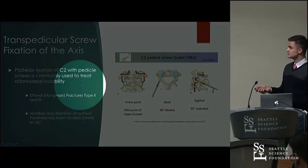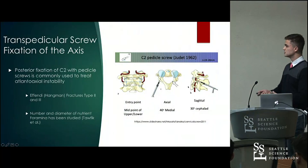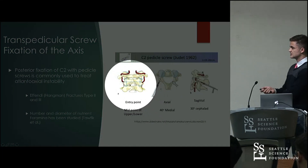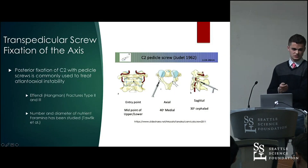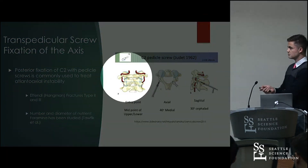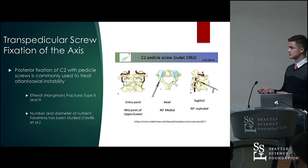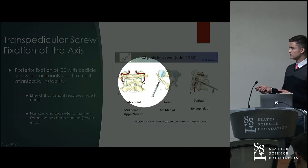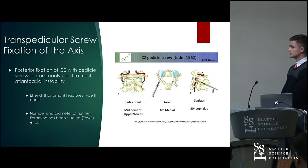Here I've placed some images that describe what C2 pedicle screw placement looks like from different planes. I wanted to use this time to use the entry points shown in this part of the image as a marker for where the nutrient foramina are usually located on C2 — they usually are around the entry points shown here. C2 pedicle screw placement is a pretty risky procedure because on either side you have the vertebral artery, which passes very closely to the pedicles. So there's not a lot of wiggle room, which is why having an entry point as an anatomical landmark would be important.